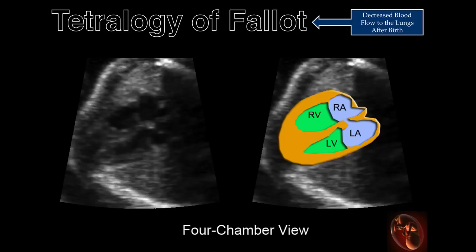This is the four-chamber view from a fetus with Tetralogy of Fallot. Notice that the four-chamber view appears to be normal with no evidence of a ventricular septal defect. While disproportion between the right and left atrial and ventricular chambers is often associated with an outflow tract abnormality, when Tetralogy of Fallot is present, the four-chamber view is almost always normal.